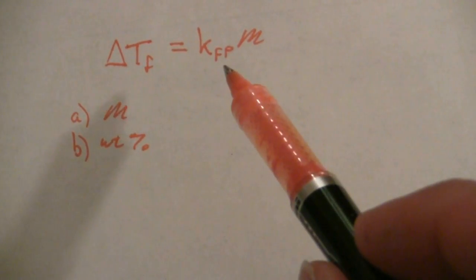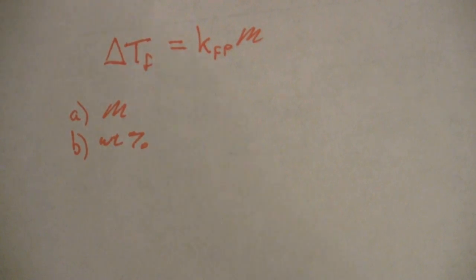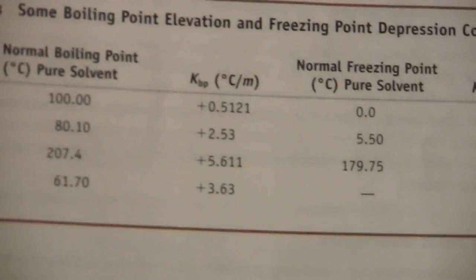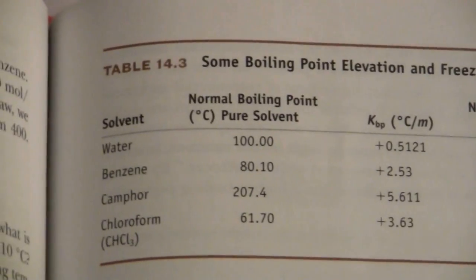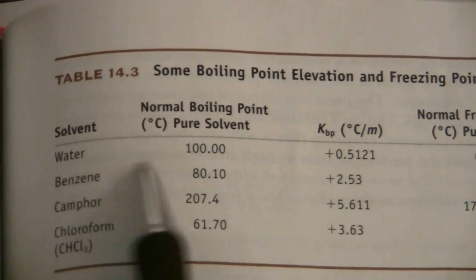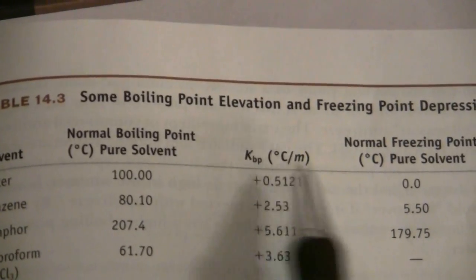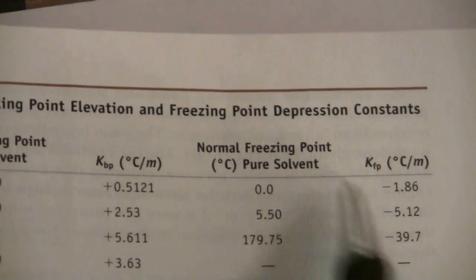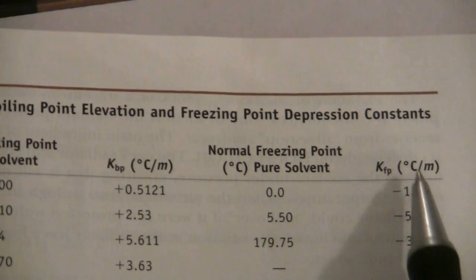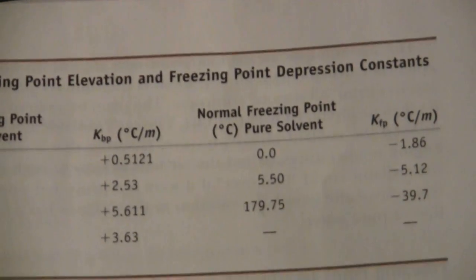We're going to get that from a table in the book. Since this is water, we can look at table 14.3. The solvent is water, and here's the normal freezing point and the kf for the freezing point: negative 1.86 degrees C per molal.